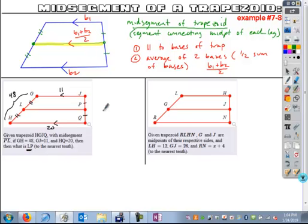All we need to do is find LP, the length of that mid-segment. The mid-segment of the trapezoid is going to be one-half the sum of the legs, 11 and 20, giving us one-half of 31.